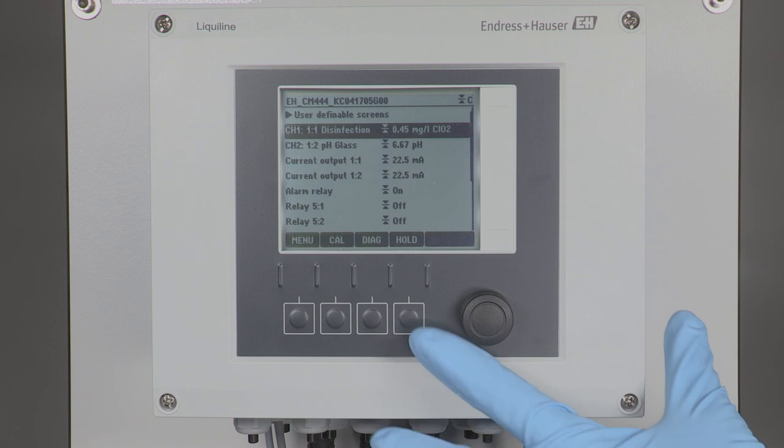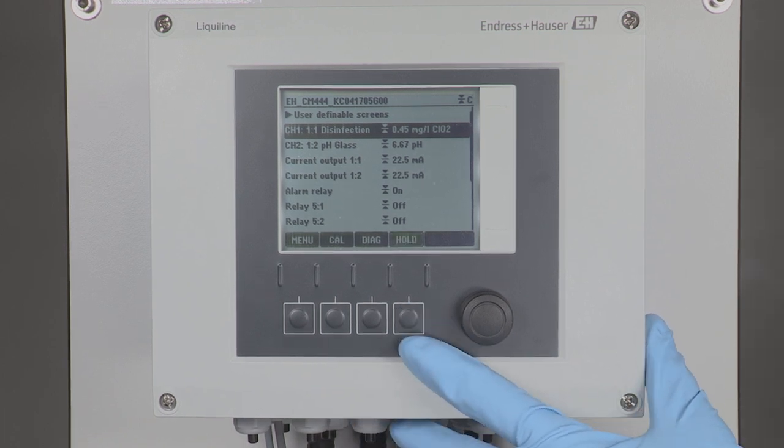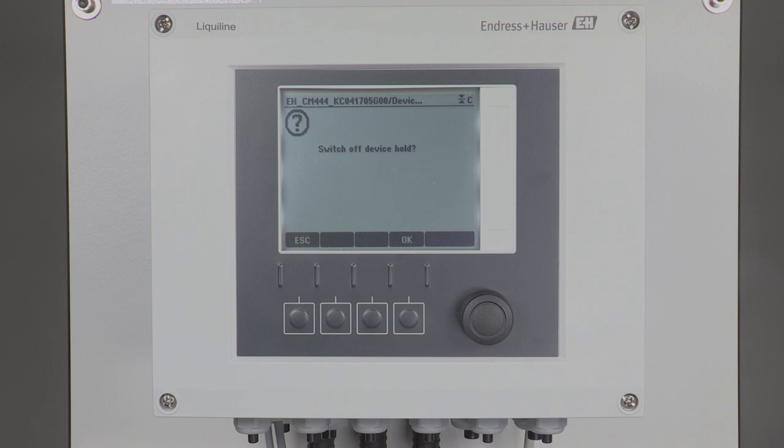After the polarization period, disable the hold function. The sensor must be recalibrated after polarization time. To learn how the calibration of CCS50D is done, please watch our video How to calibrate MemoSense CCS50D Chlorine Dioxide Sensors.